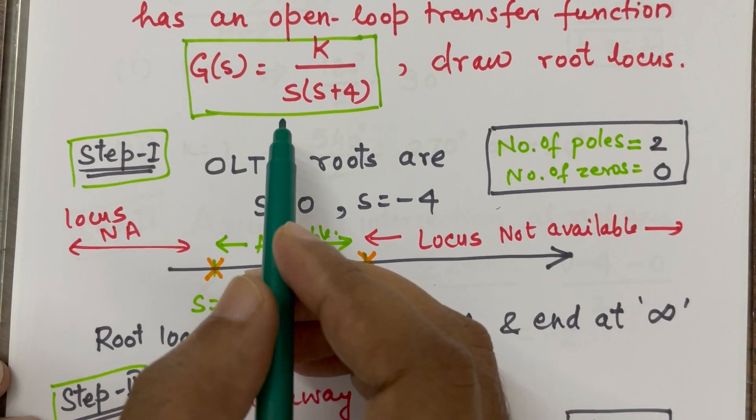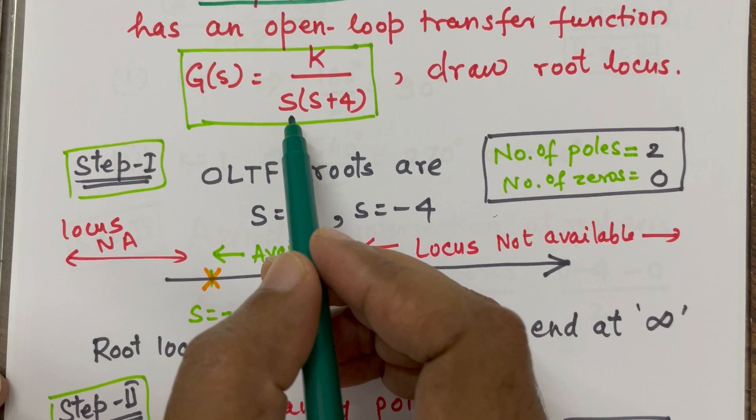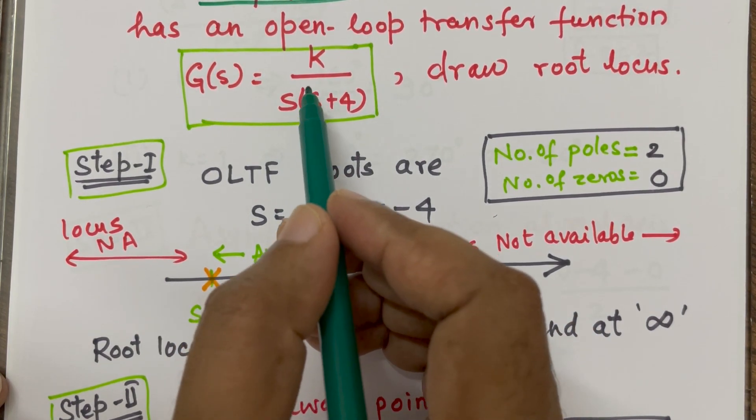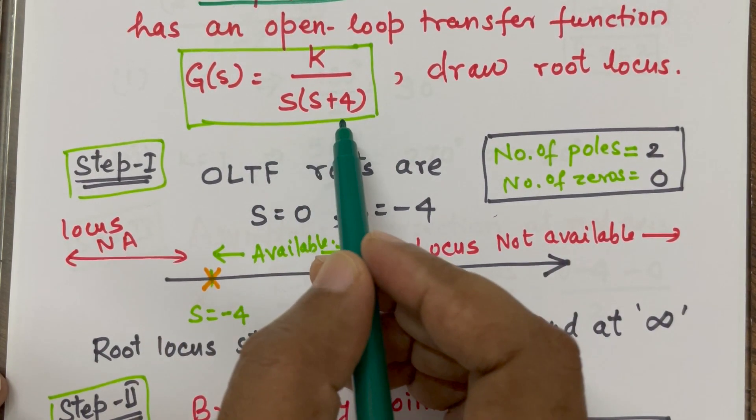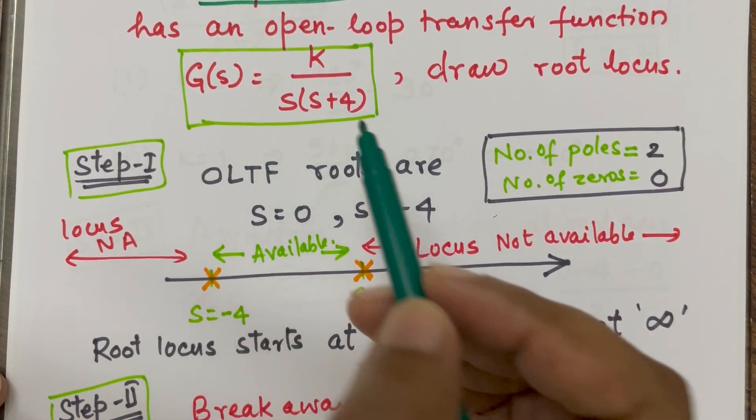So first of all, we will see for this open loop transfer function, how many open loop transfer function roots are there. As there is in numerator, there is no s. And in denominator, we have s equal to 0 and s equal to minus 4.